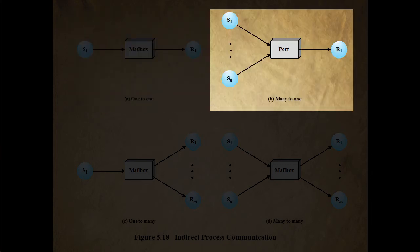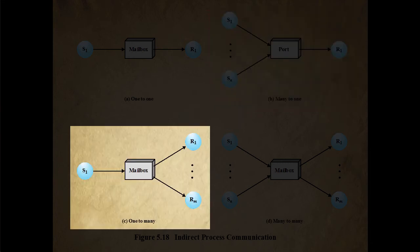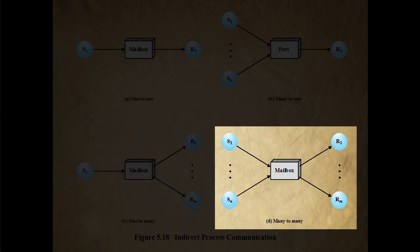A many-to-one relationship is useful for client-server interactions, where one process provides service to a number of other processes. In this case, the mailbox is often referred to as a port. A one-to-many relationship allows for one sender and multiple receivers, which is useful for applications where a message or some information is to be broadcast to a set of processes. And a many-to-many relationship allows multiple server processes to provide concurrent service to multiple clients.